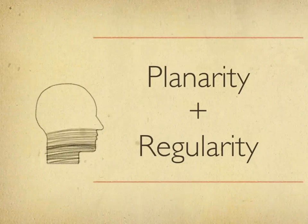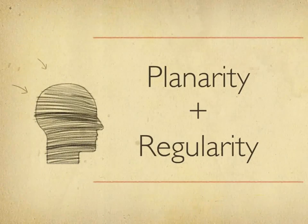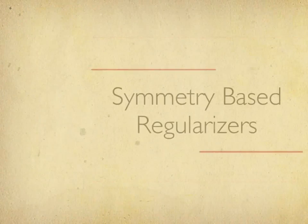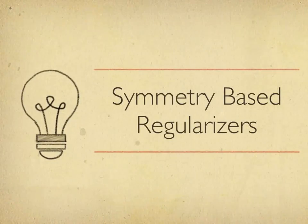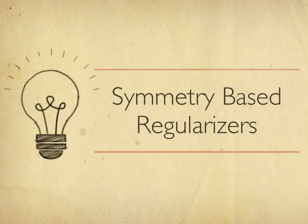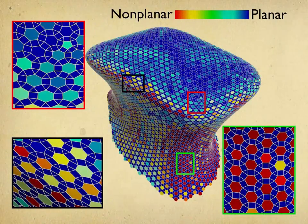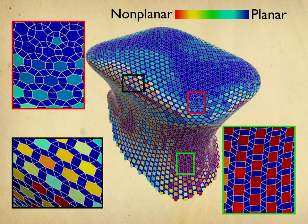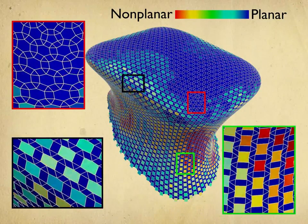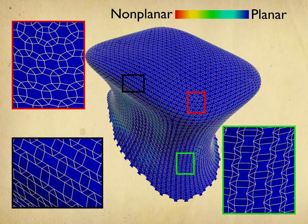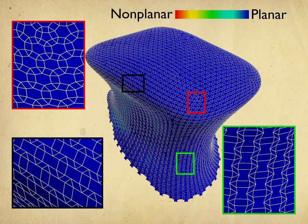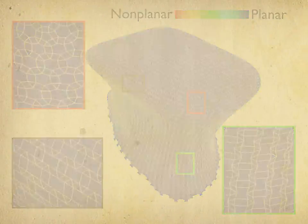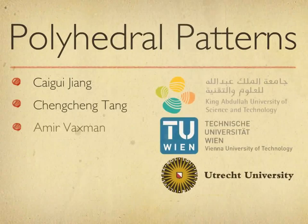To achieve both face planarity and pattern regularity, we propose symmetry-based regularisers. Our results show faces that deform naturally in regions of positive, zero, and negative Gaussian curvature to create aesthetic polyhedral patterns.